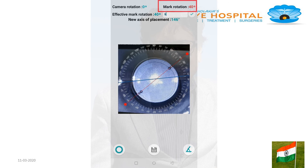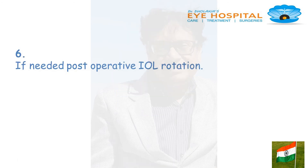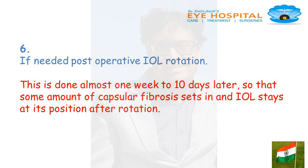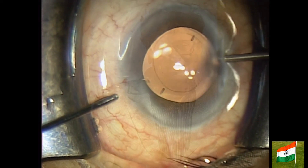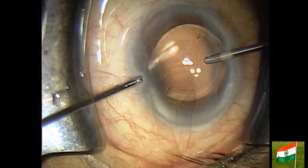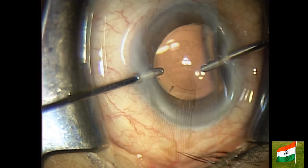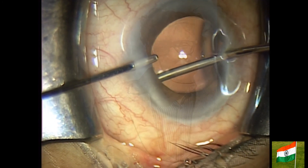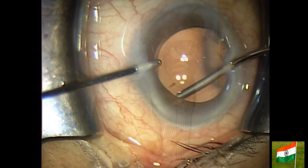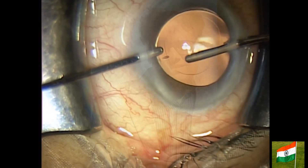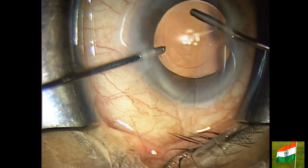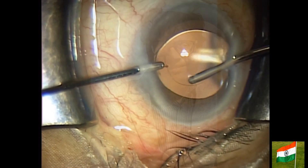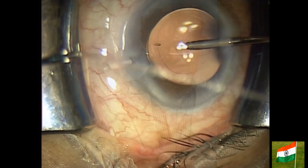Topic 6: In this patient, the IOL is rotated almost 30 degrees from its intended axis. If needed, post-operative IOL rotation is done — this is done almost one week to 10 days later so that some capsular fibrosis sets in and the IOL stays at its position after rotation. Post-operatively, I take the patient after 10 days. Bimanual irrigation-aspiration cannulas are inserted. With the irrigation cannula, I am separating the anterior capsule adhesion. Once the adhesions are a little free, I rotate the IOL to the target — here 90 degrees — using the two-dimensional technique again to finish the case.